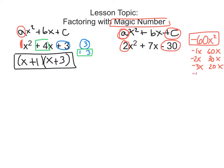I'm going to keep going. We have negative 3x times 20x, negative 4x times 15x, negative 5x times 12x, and lastly negative 6x times 10x. So negative 1 times 60, negative 2 times 30, negative 3 times 20, negative 4 times 15, negative 5 times 12, and negative 6 times 10 — all of those multiply to give you negative 60, and then the x's give us x squared.